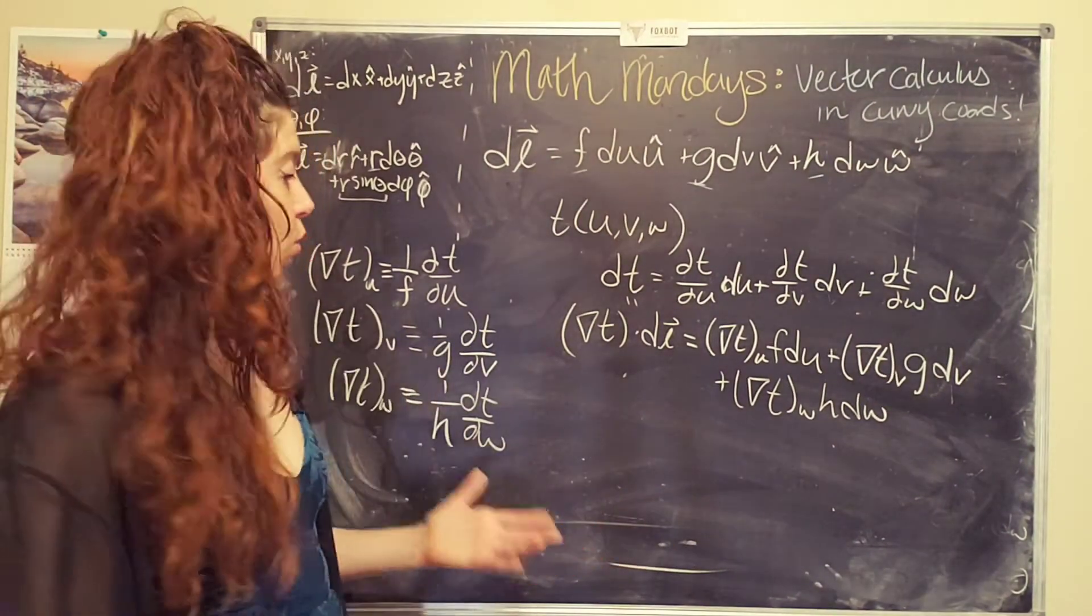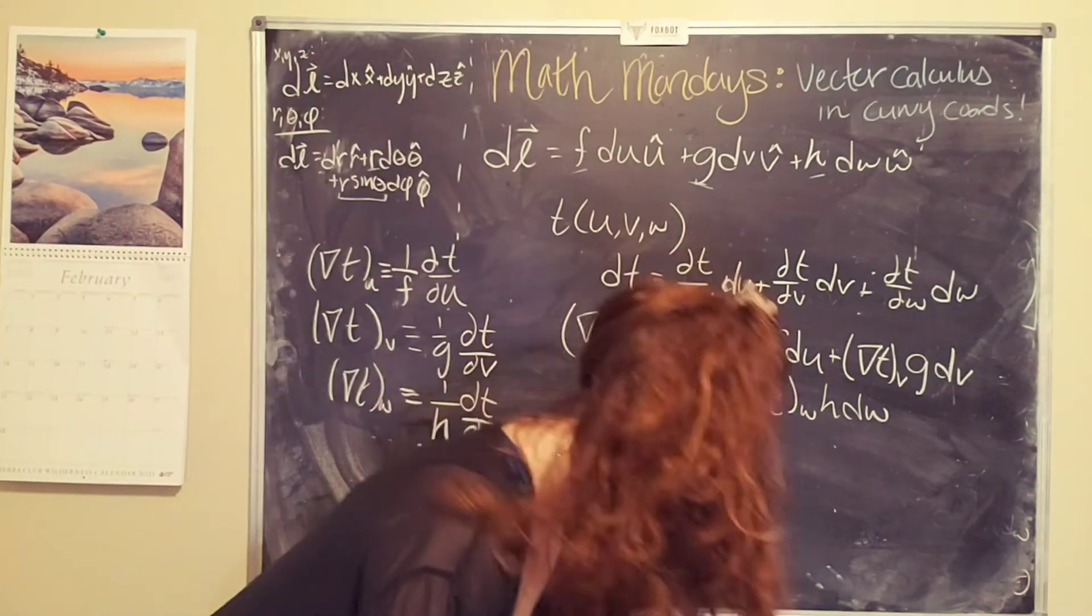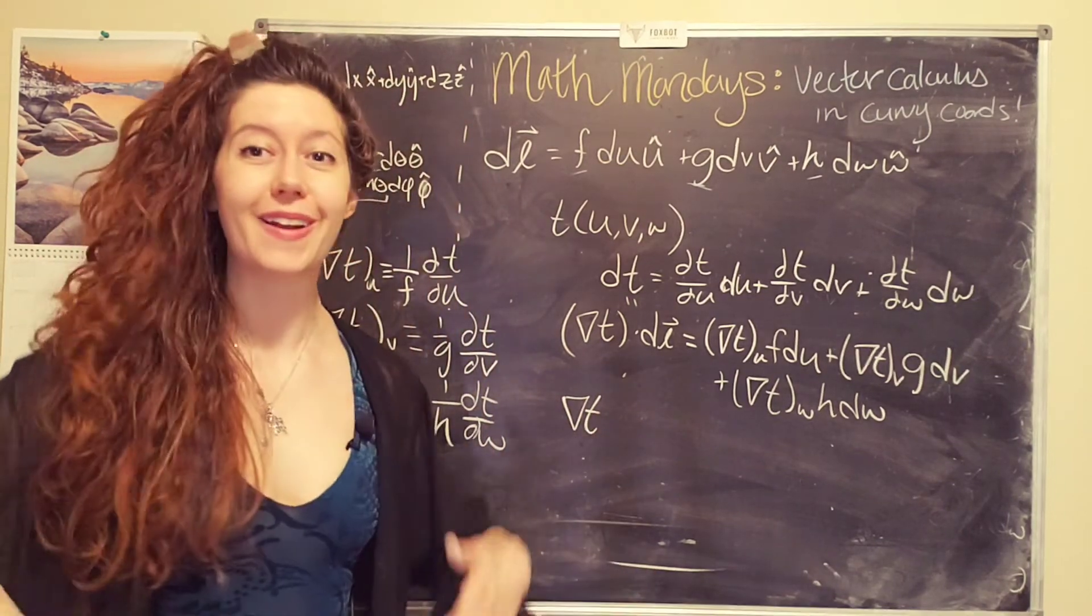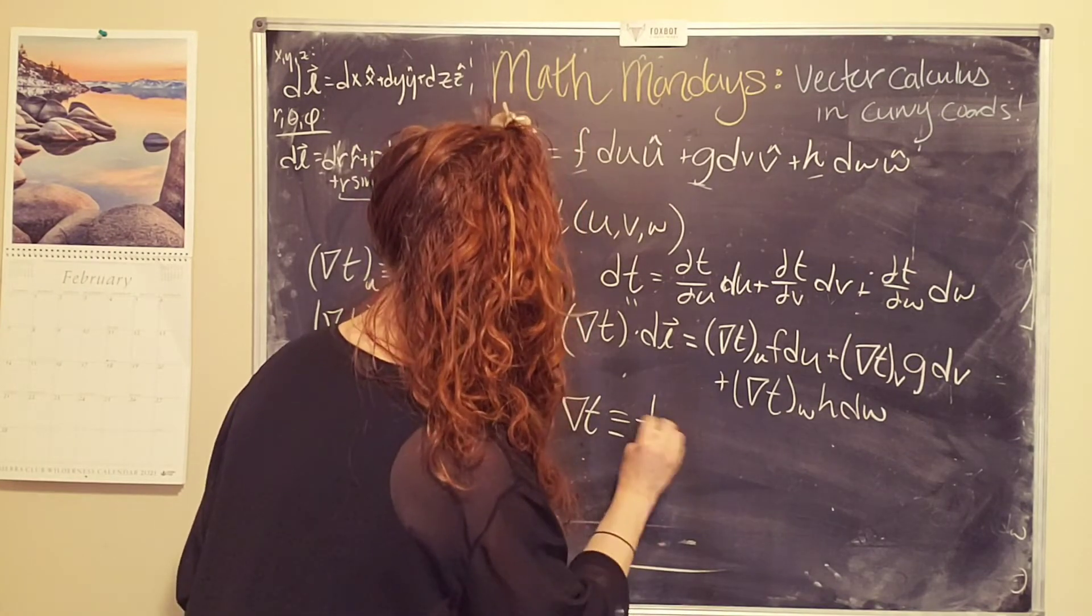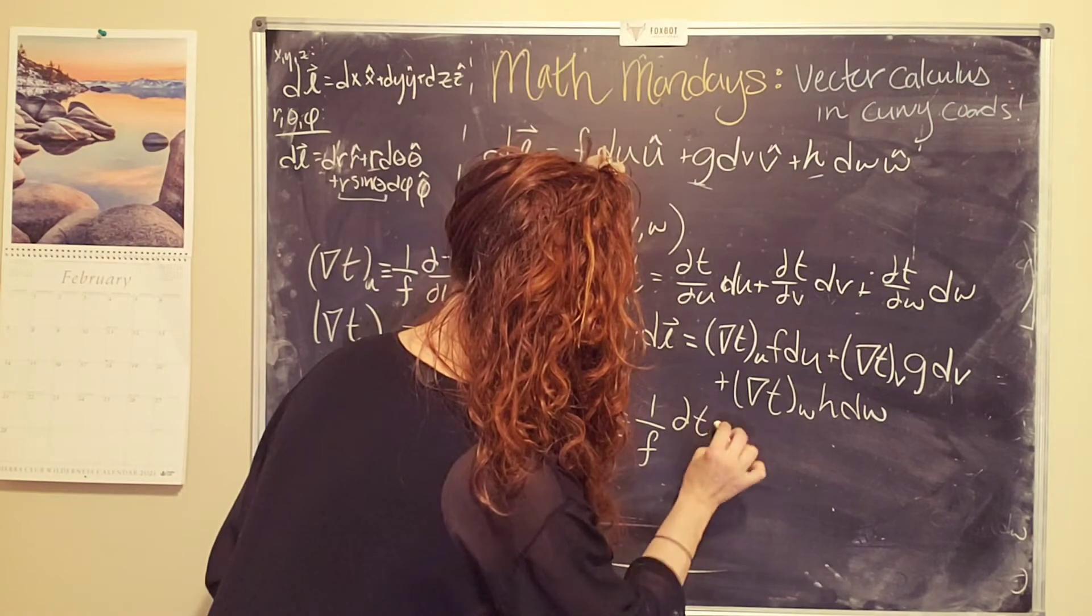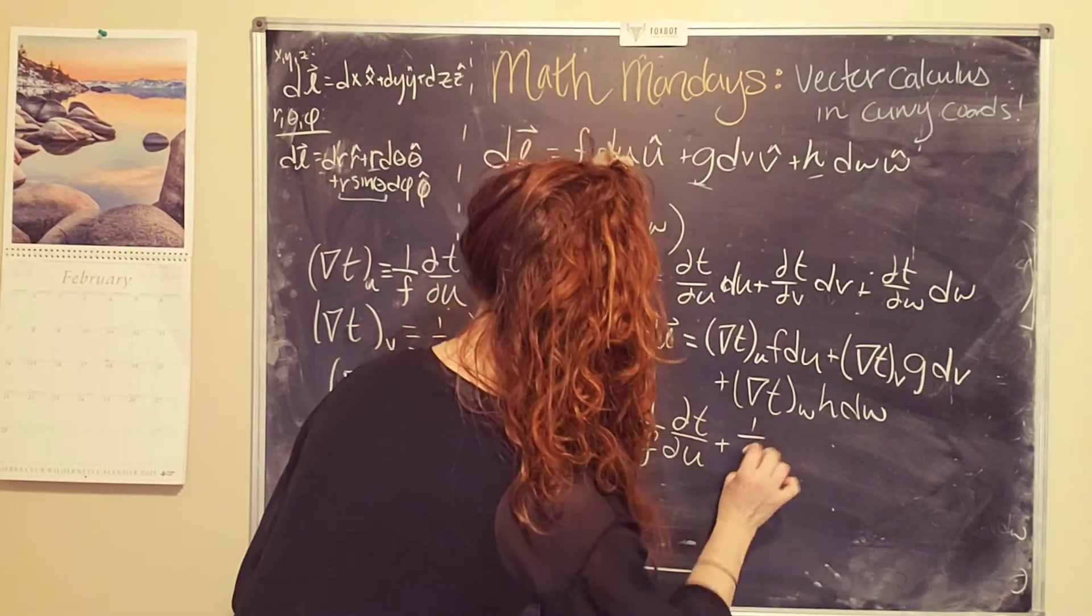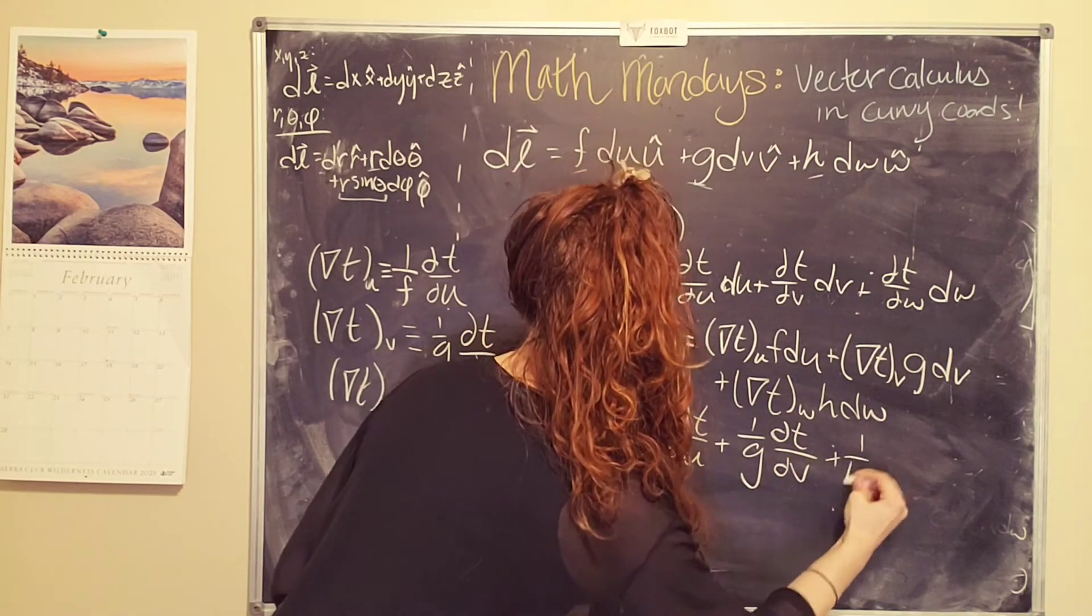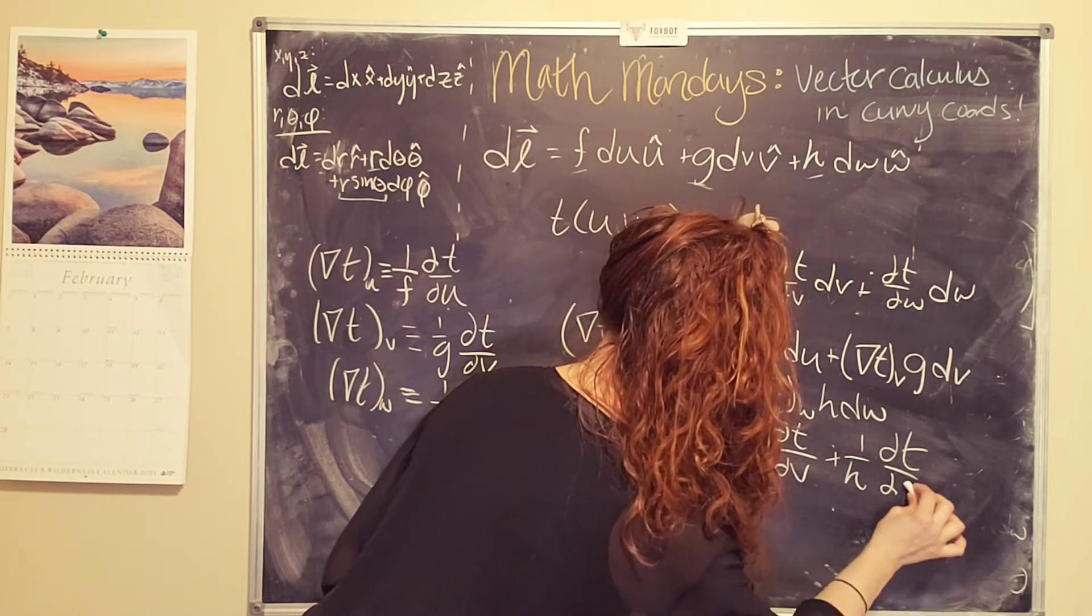And so now we have created a formula for the gradient of t. So now we can say the gradient of t in our generic coordinate system is defined to be 1 over f times the partial of t with respect to u, plus 1 over g times the partial of t with respect to v, plus 1 over h times the partial of t with respect to w.